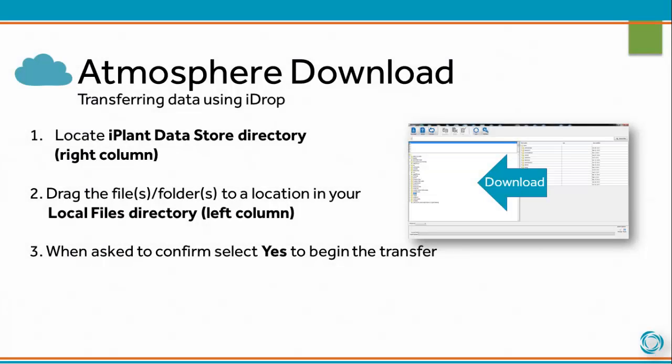To download files into your Atmosphere instance from the iPlant datastore, locate the iPlant datastore directory in the right column. Drag the files or folders to a location in your local files directory. When asked to confirm, select yes to begin the transfer.